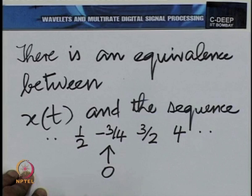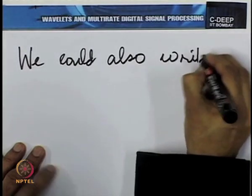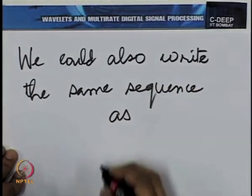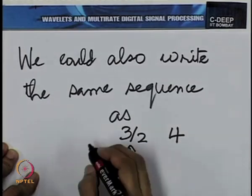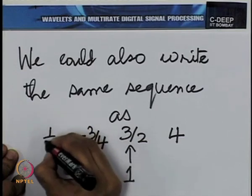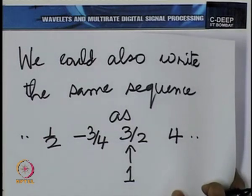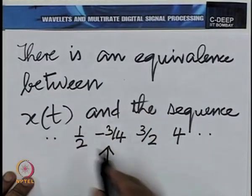As an alternative, we could have also written the same sequence differently — just to introduce notation properly. You could mark, for example, the sample at point number 1 as 3/2, the sample at point number 2 as 4, the sample at 0 as −3/4, the sample at −1 as 1/2 and so on. It is the same sequence written differently, just for some variety in notation. Coming to the point: there is an equivalence between the function and the sequence.